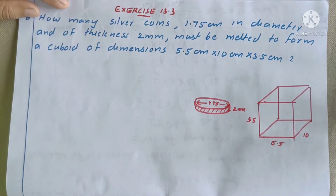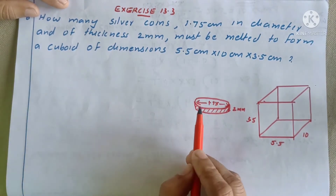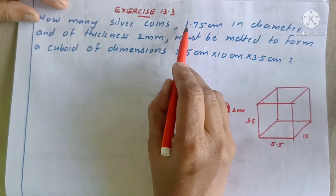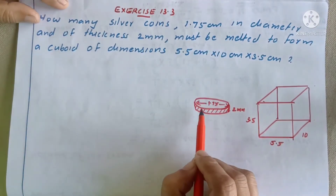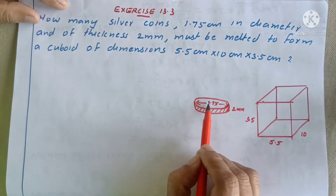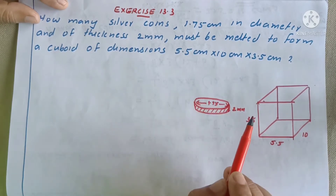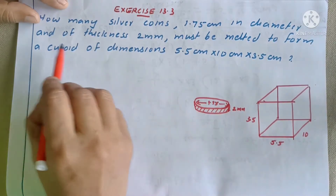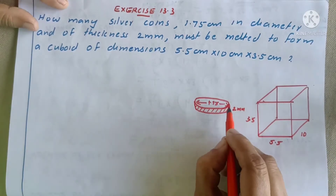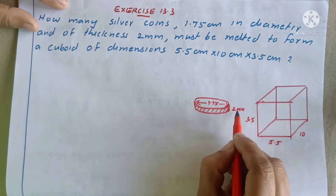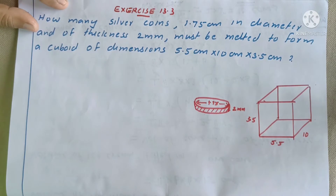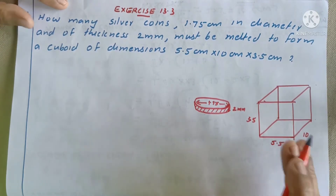How many silver coins? 1.75 cm — this is a silver coin. This is the diameter of 1.75 cm. The thickness is 2 mm. This measurement is in centimeters and this one is in millimeters.